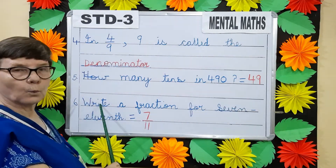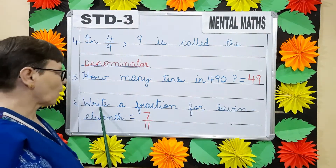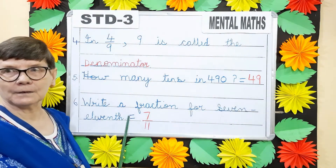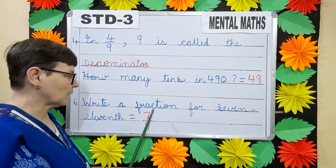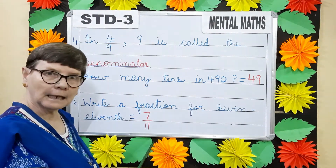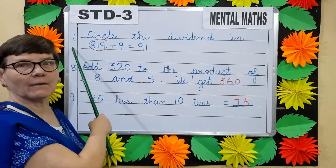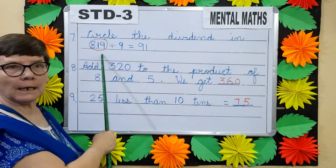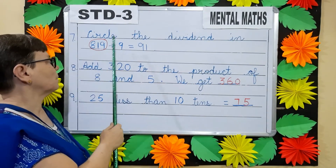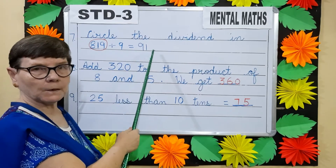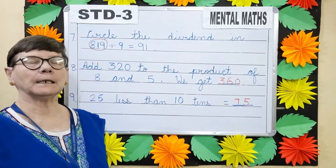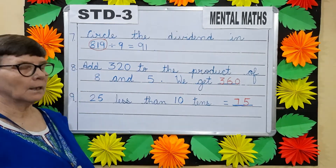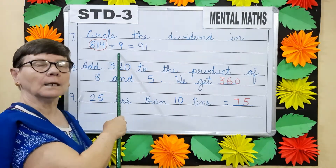Question number 6: Write a fraction for 7/11th. So the fraction is 7 by 11. Question number 7: Circle the dividend. 819 divided by 9 is equals to 91. Now in division, the number to be divided is called the dividend. So here the dividend is 819.